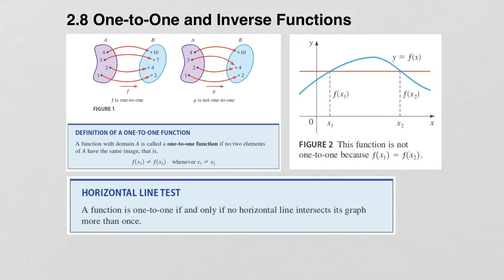Section 2.8 covers one-to-one and inverse functions. The definition of a one-to-one function is that a function is called one-to-one if no two elements of the domain have the same element in the range.